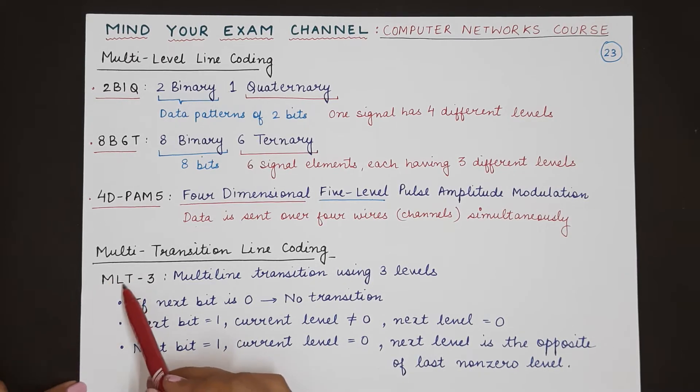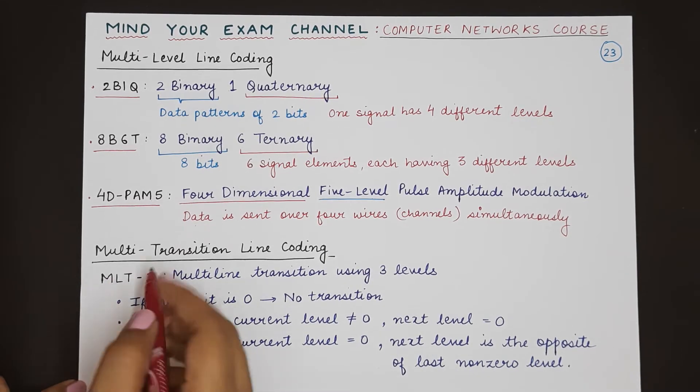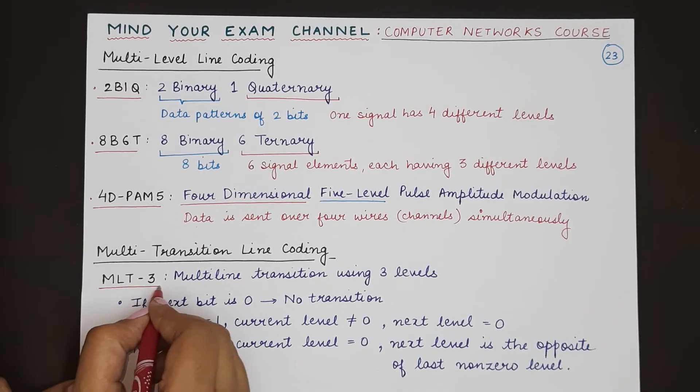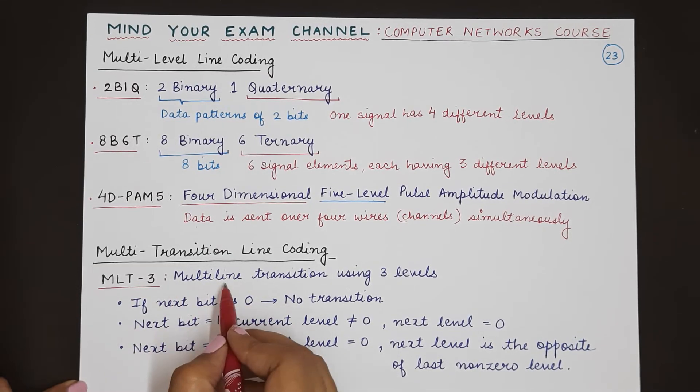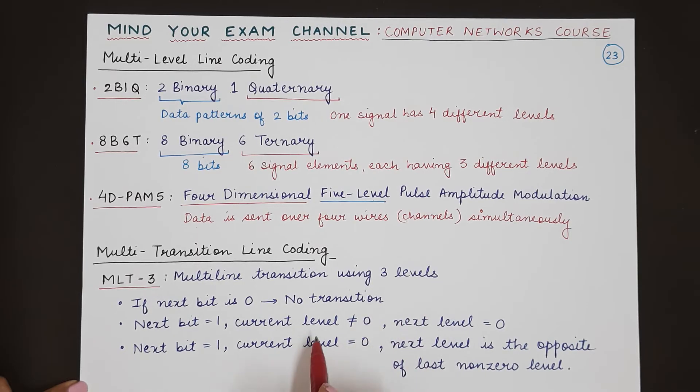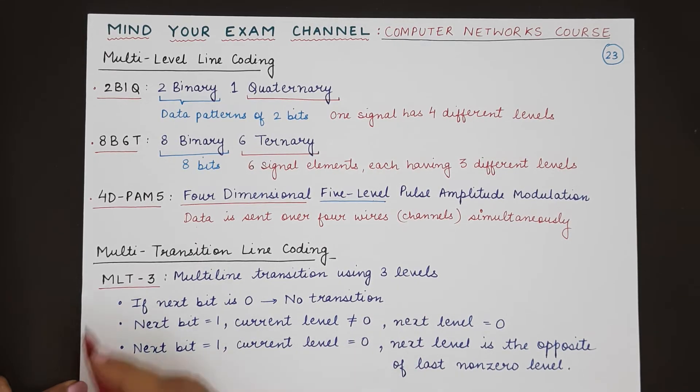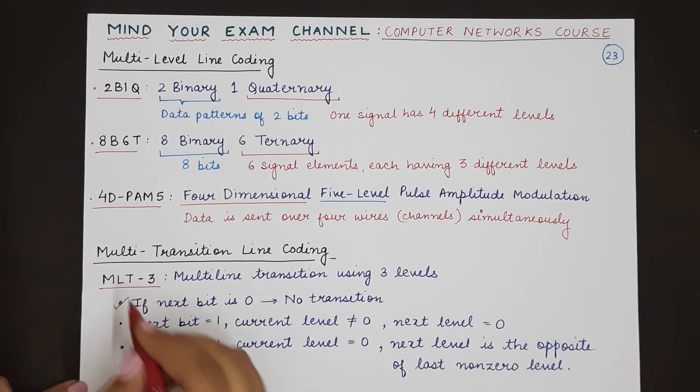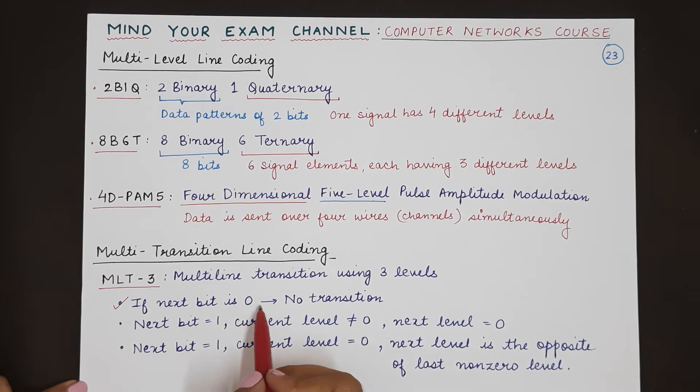Multi-transition line coding has one variation which is MLT-3—that stands for multi-line transition using 3 levels. For this there are basically three rules that you need to remember. The first is that if the next bit is zero there will be no transition.